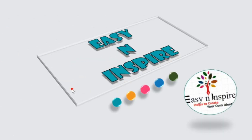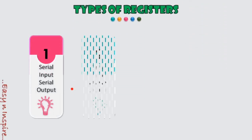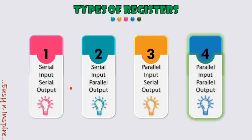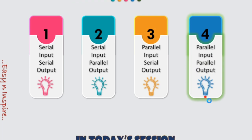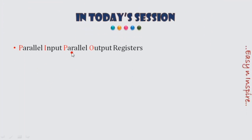Welcome back to my channel Easy and Inspired. In previous videos we have seen different types of registers like serial input serial output, serial input parallel output, and parallel input serial output. In today's session I am going to discuss about parallel input and parallel output — the PIPO shift register.